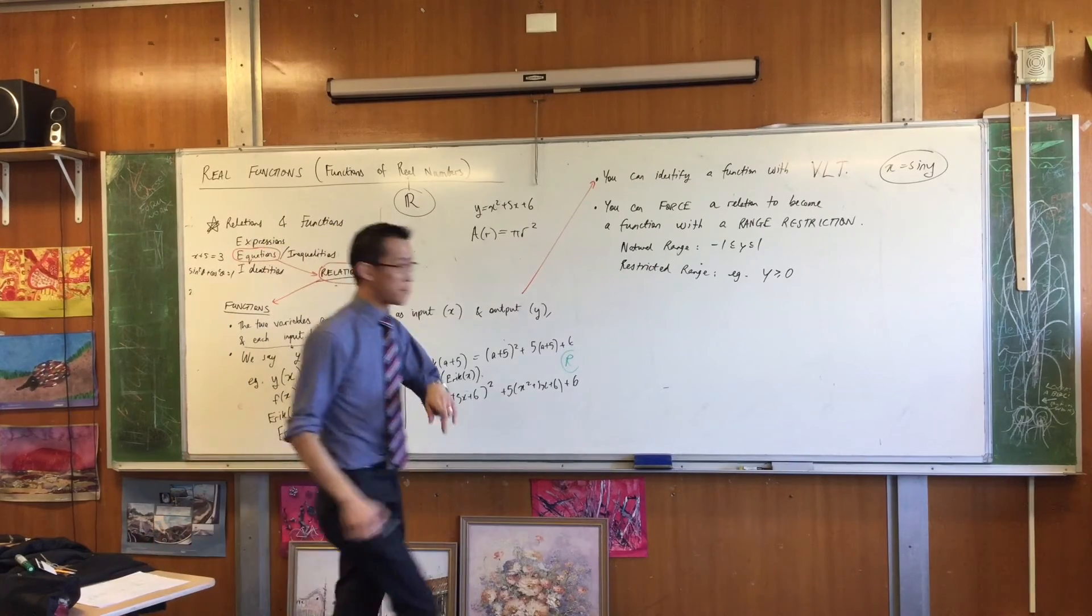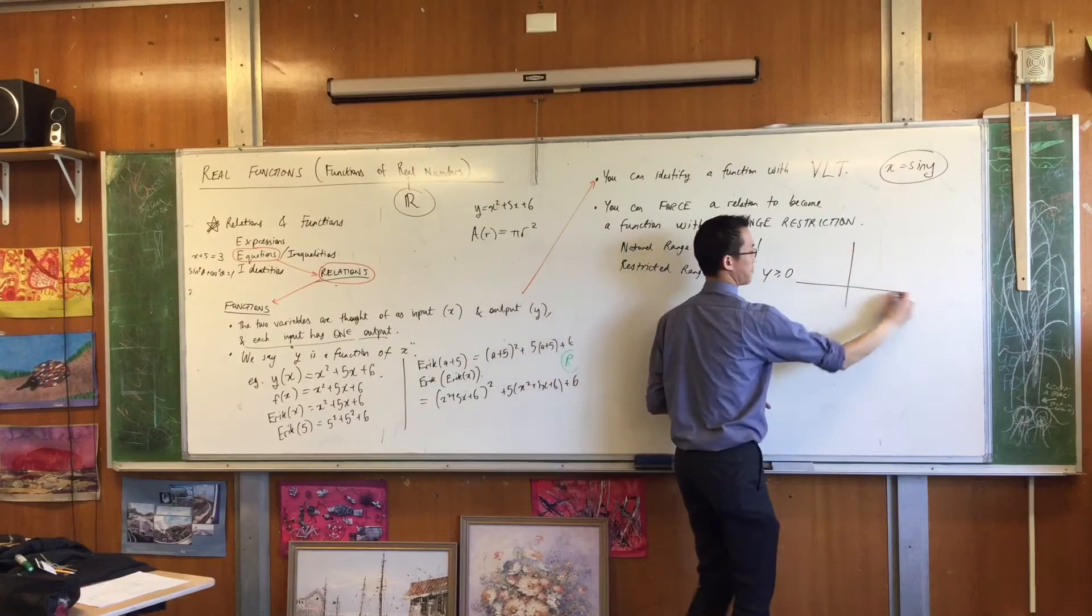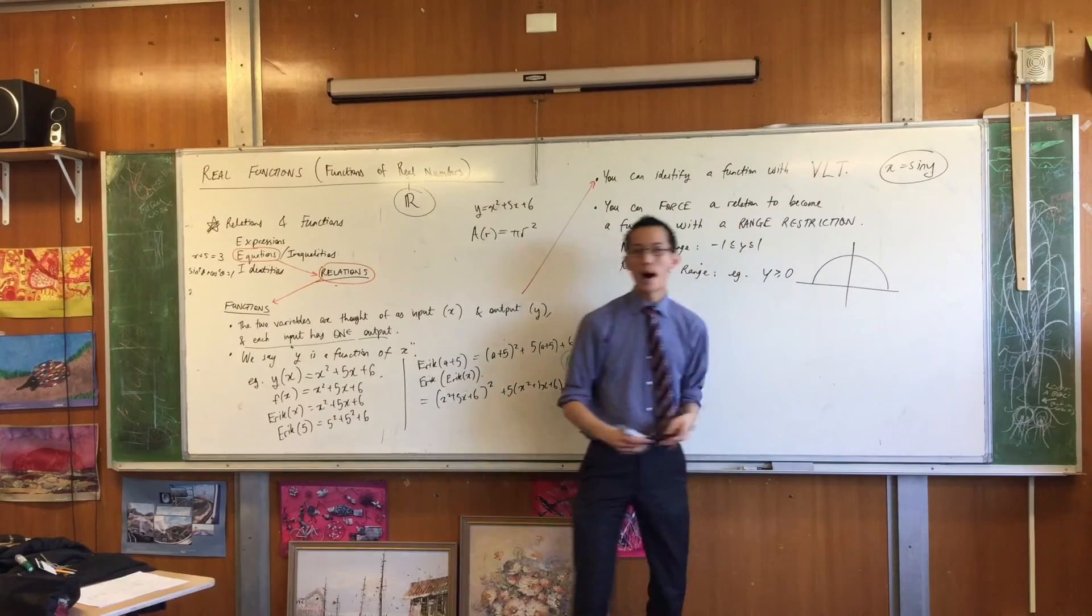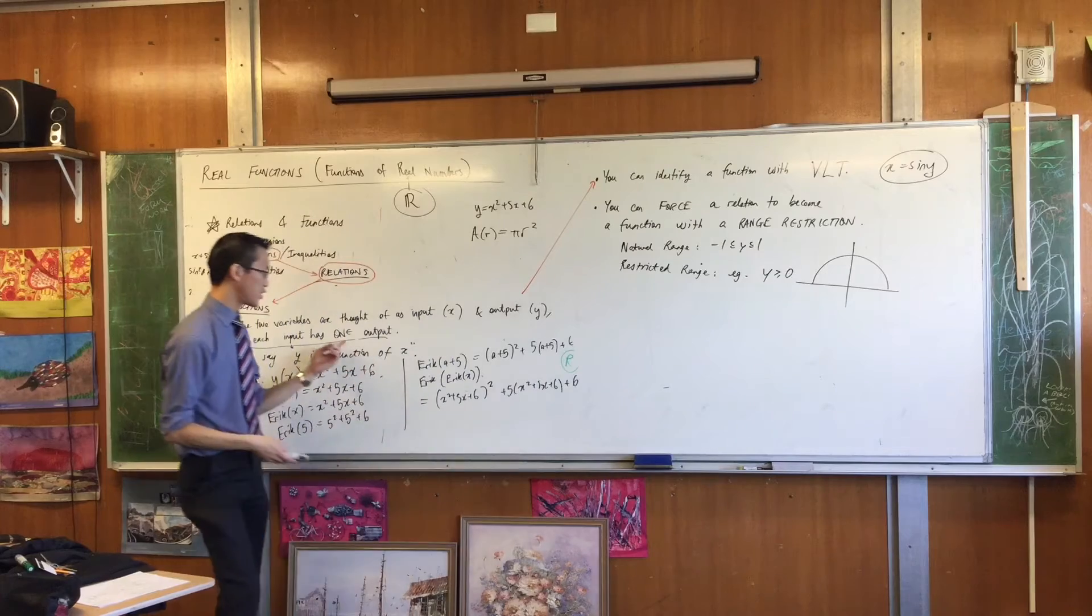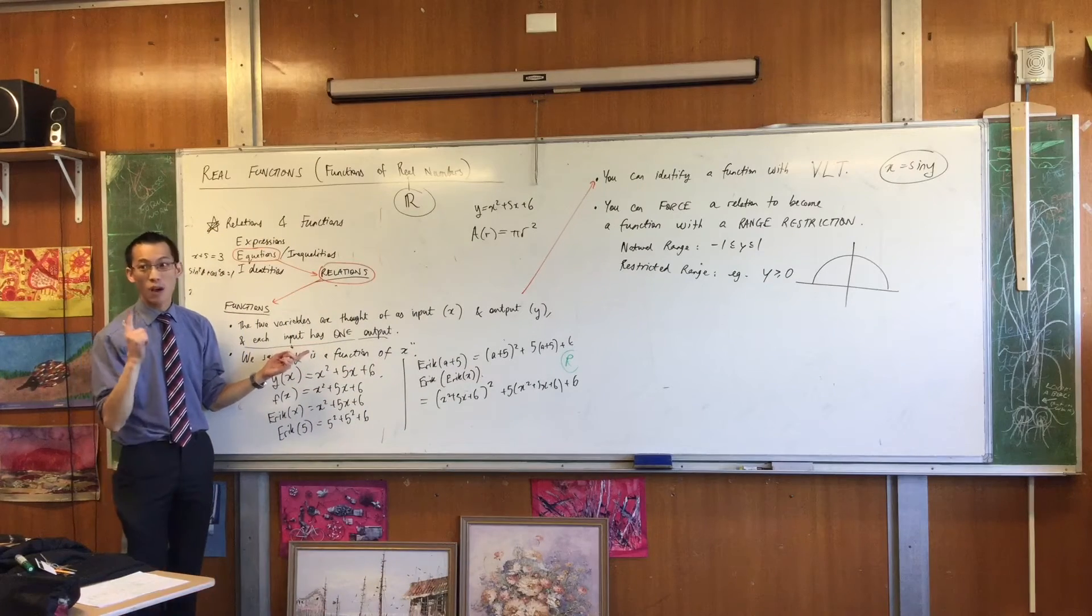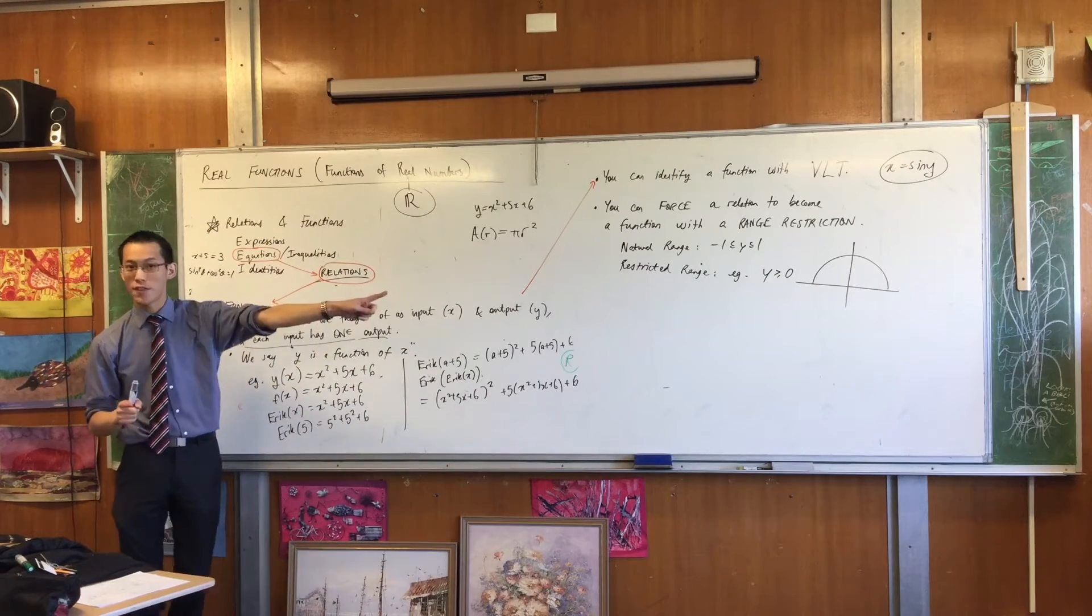But the part of the circle that I've got passes the vertical line test. Every value of x that you put in, you'll only get out one value of y. So that's a function now.